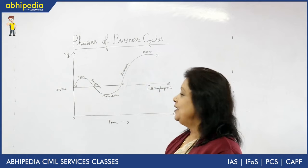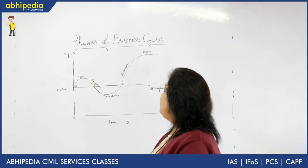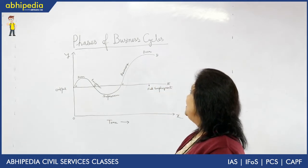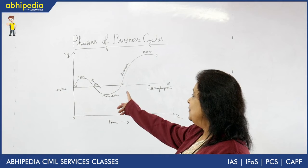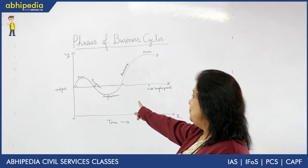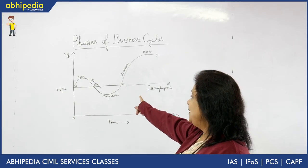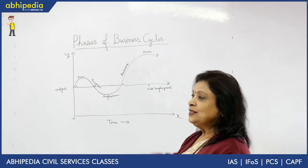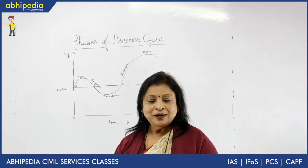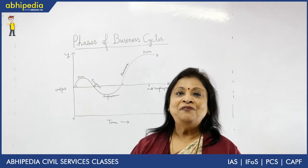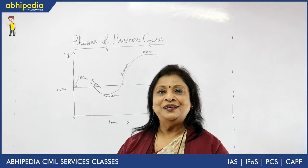As you can see in the diagram here, we have different phases of the business cycle: boom, recession, depression, and recovery. I want to discuss the characteristics of each of these different phases.